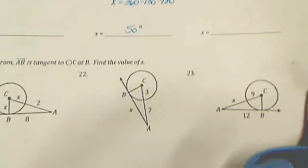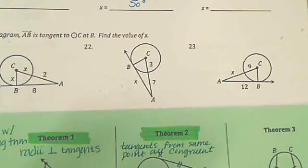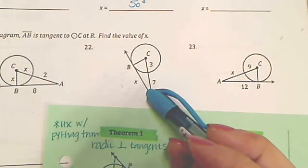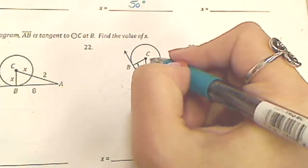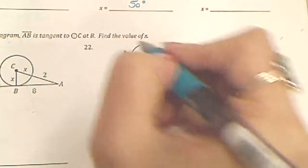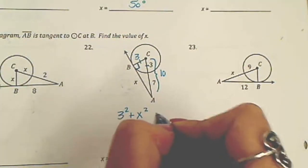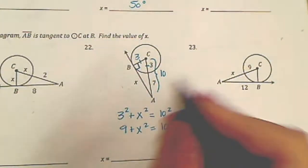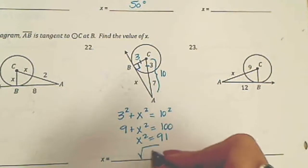Let's do number 22. Looking at the theorems, theorem one pops out because I've got radii and tangents, making this a right angle. This is 3 plus 7, so the hypotenuse is 10. This is a radius so it's 3. It's another Pythagorean theorem: 3 squared plus x squared equals 10 squared, so 9 plus x squared equals 100, giving x squared equals 91. Since 91 can't be simplified, x equals the square root of 91.